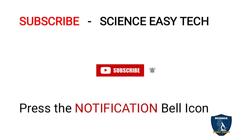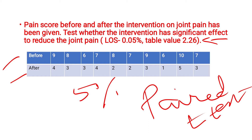Let's move on to the question. This question was given in a university question paper posted by Dr. MGR Medical University, Tamil Nadu. The question asks: pain scores before and after an intervention on joint pain have been given — test whether the intervention has a significant effect to reduce the joint pain. The level of significance given is 0.05, that is 5% level of significance. The table value already given is 2.26, because you are not allowed to refer to tables or carry books or mobiles in the exam center, so they provide this as a hint.